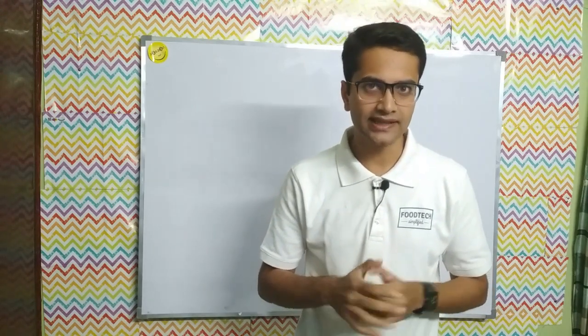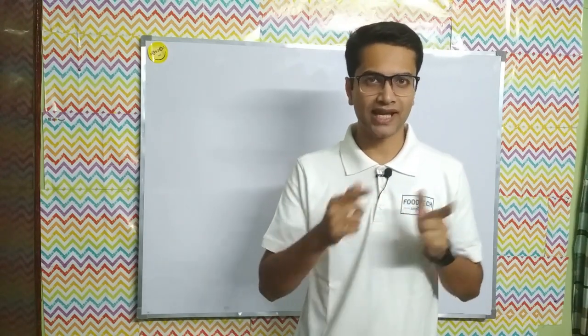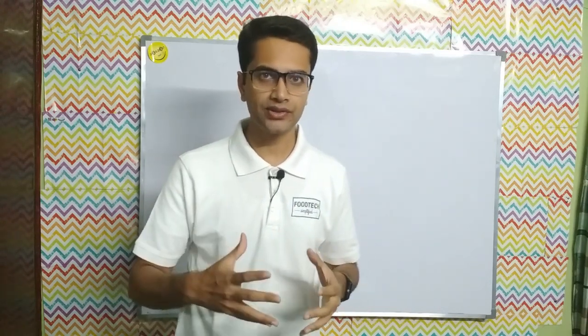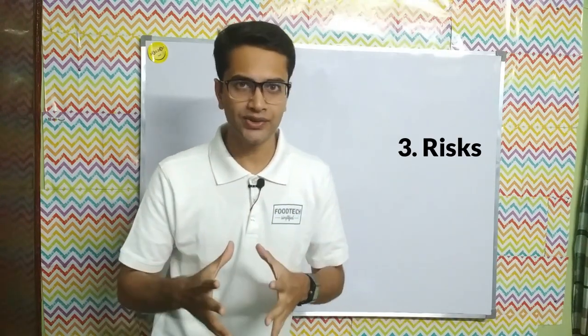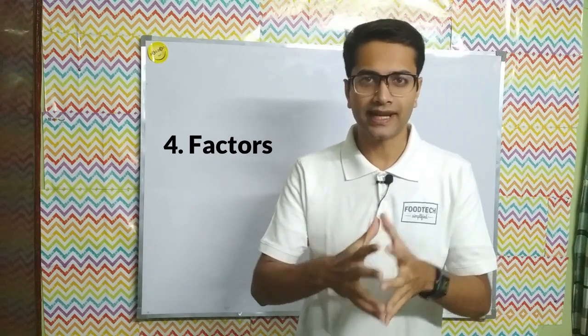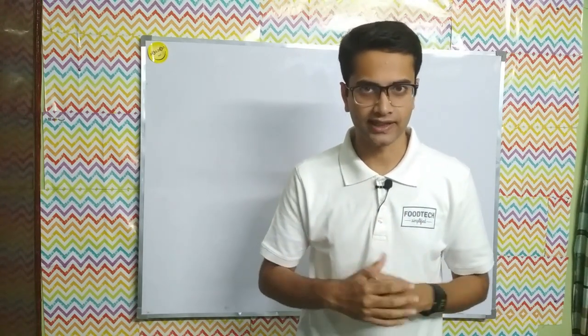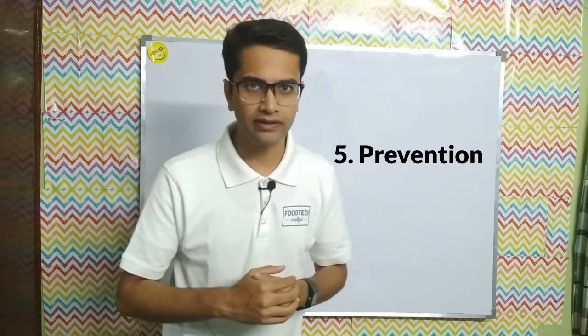This is part 4 of the food safety series — if you haven't watched parts 1, 2, and 3, make sure you watch those; links are in the description. This video is divided into five phases: first, common hazards and their sources; second, classification of physical hazards; third, risks associated with physical hazards; fourth, factors that determine the size of the risk; and fifth, methods to prevent physical hazards from entering food.